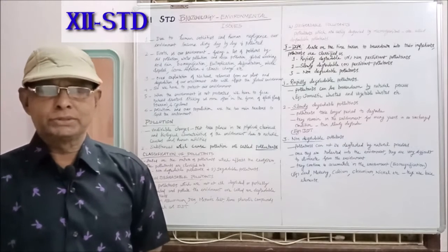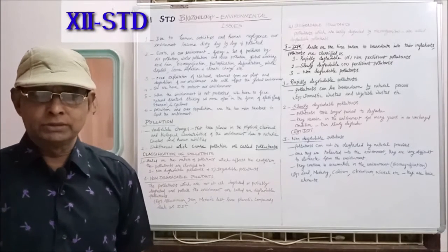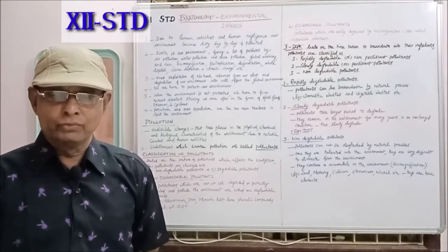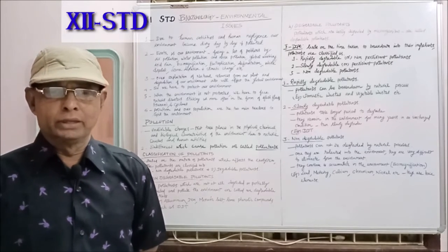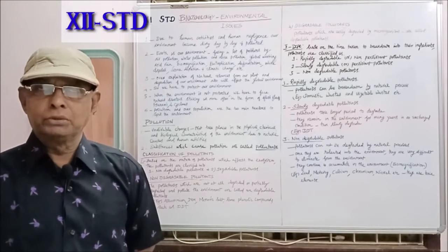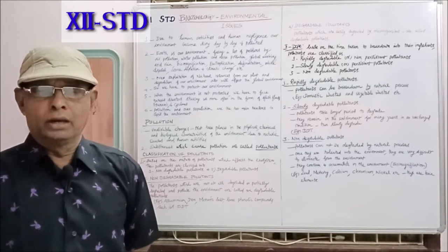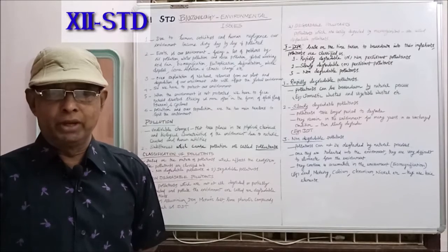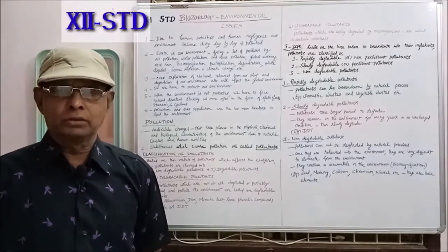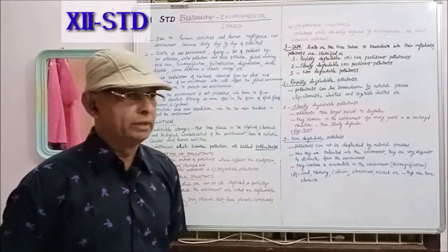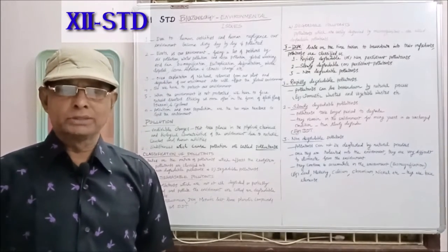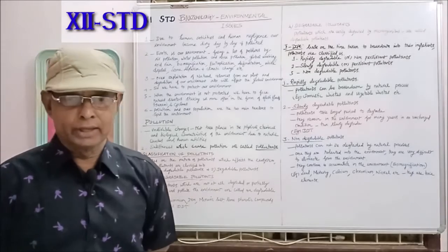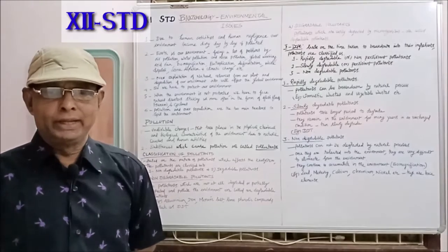Slowly degradable or persistent pollutants are those that take a longer period to degrade. They remain in the environment for many years in an unchanged condition, then slowly degrade. They may take decades or longer to degrade. For example, DDT will persist in the soil for a longer period before it degrades.